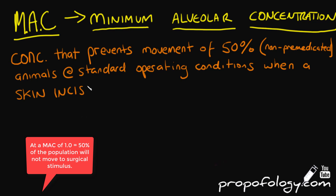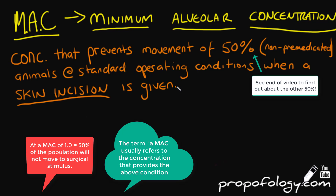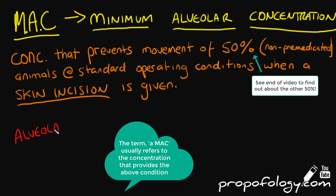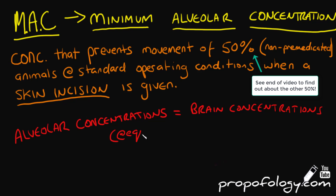A MAC of 1 means that 50% of that population will not move to skin incision. We use alveolar concentration because it can be detected quite easily using your anaesthetic machine, and at near equilibrium, alveolar and brain tensions are virtually equal. This is important because the site of action of your volatile agent is in the central nervous system.